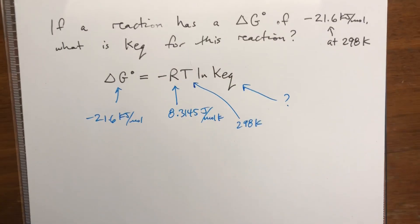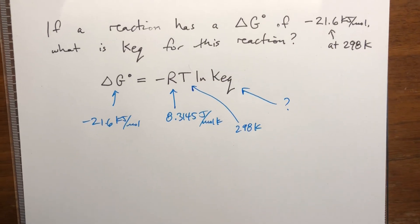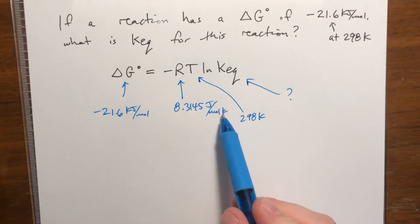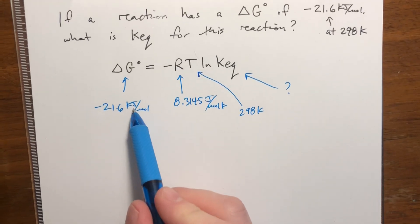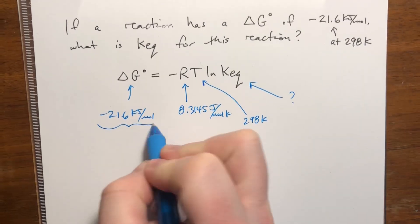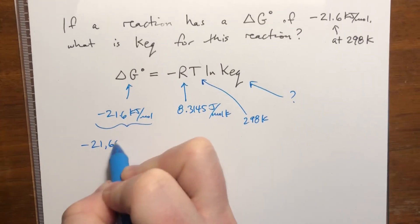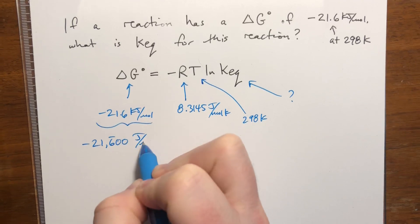And Keq is what we're solving for. So first things first, R is going to dictate what units we need. Our temperature is in Kelvin, so that's good, but this is in kilojoules per mole instead of joules per mole. So we are going to convert this by multiplying by a thousand to negative 21,600 joules per mole.